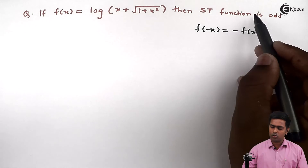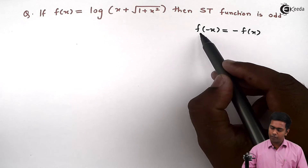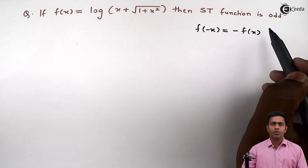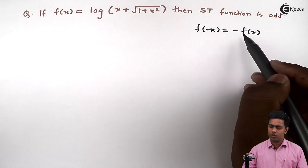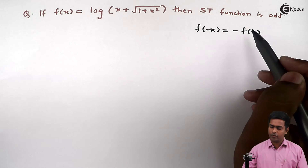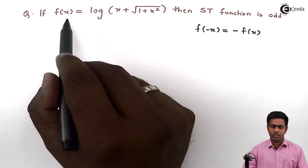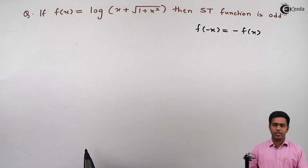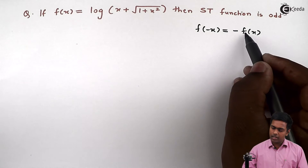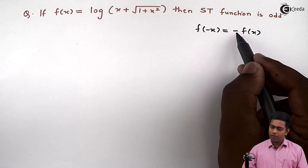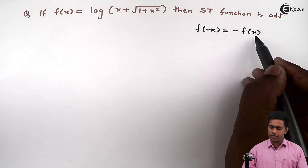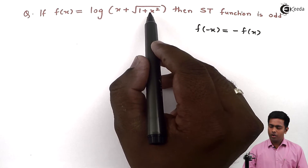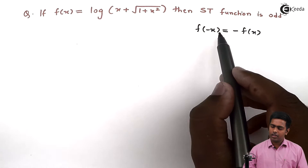So it means here we have to show that f of minus x is equal to minus f of x. If we succeed in showing that f of minus x is equal to minus f of x, then only we will say that yes, this function f of x is an odd function. On the right hand side we have minus f of x, whose value is already given in the question. So we will start with the left hand side.